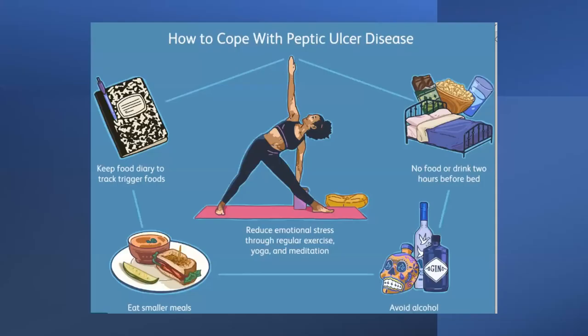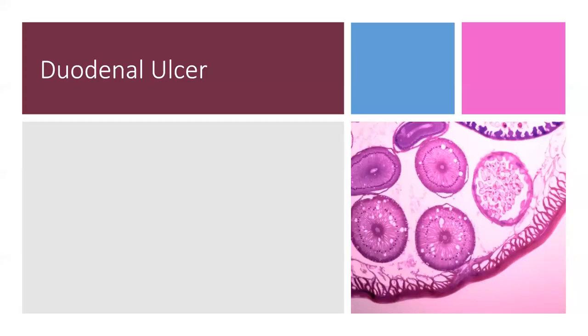To cope with peptic ulcer disease: reduce emotional stress through regular exercise, yoga, and meditation. No food or drink two hours before bed. Avoid alcohol as much as possible. Eat smaller meals instead of bigger portions. Keep a food diary to track trigger foods and try to avoid them.